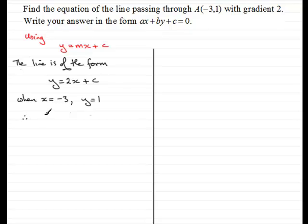So therefore what we have is Y, which we know is 1, equals 2 times X, that would be 2 times minus 3 here, plus C. So therefore we have 1 equals 2 times minus 3, which is minus 6, and then we have plus C. So if I add 6 to both sides, we end up with 7 equals C, or C equals 7.